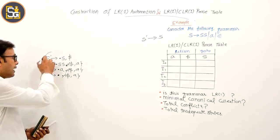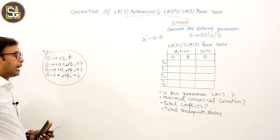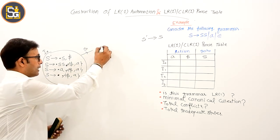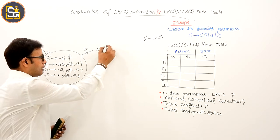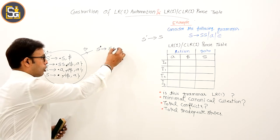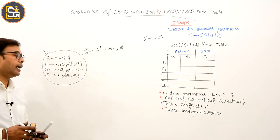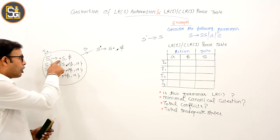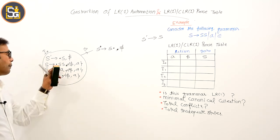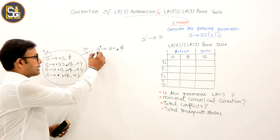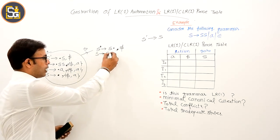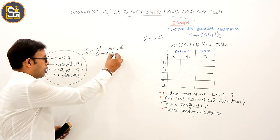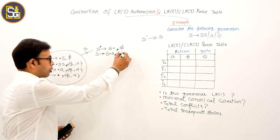इस तरीके से हमको initial state I0 मिल गई. अब यहां से S के लिए transition करते हैं: S derives S dot, comma dollar — यह item बनेगा. और S derives S dot S, comma dollar — क्योंकि दो जगह dot के बाद S है, दोनों एक ही state पर जाएंगे.